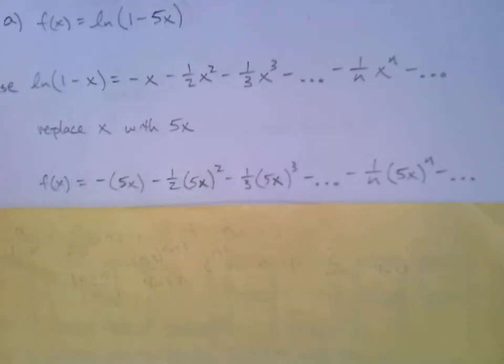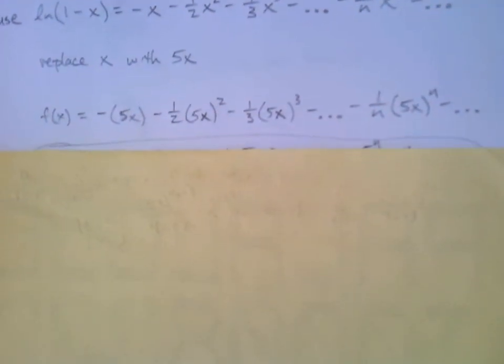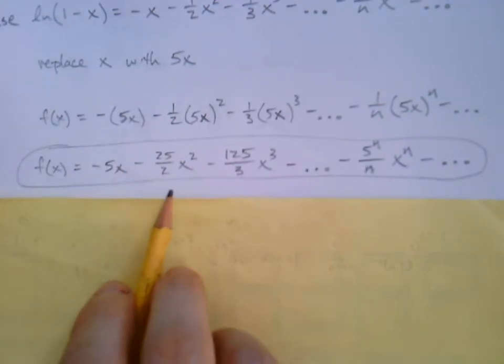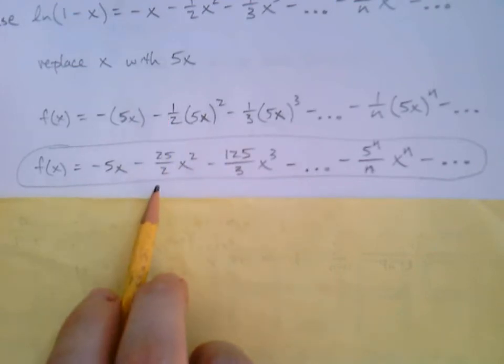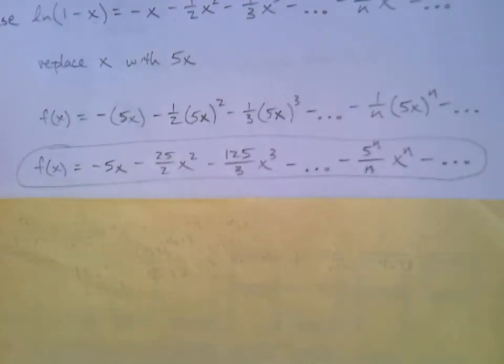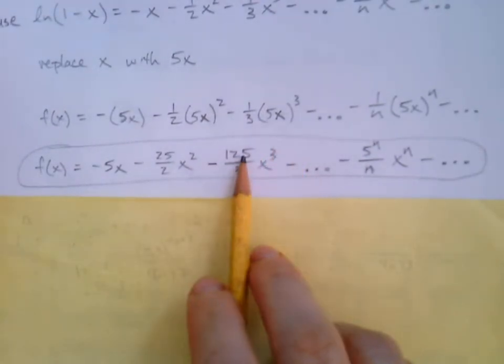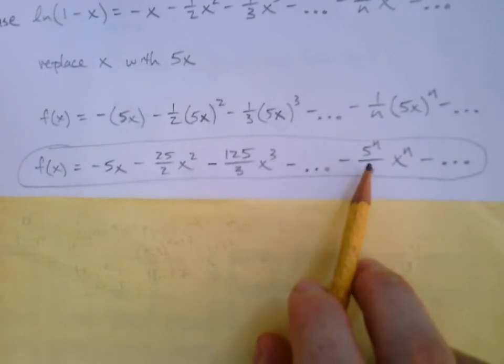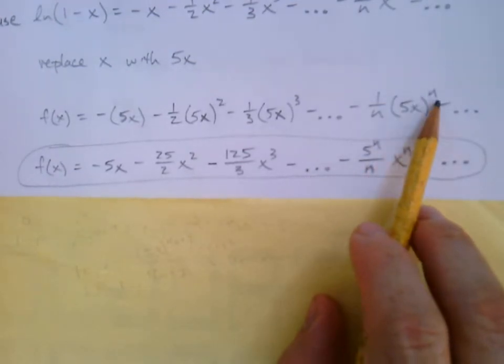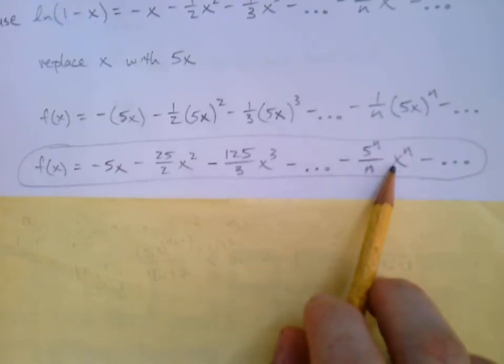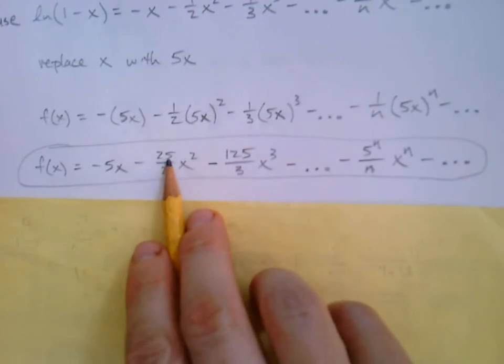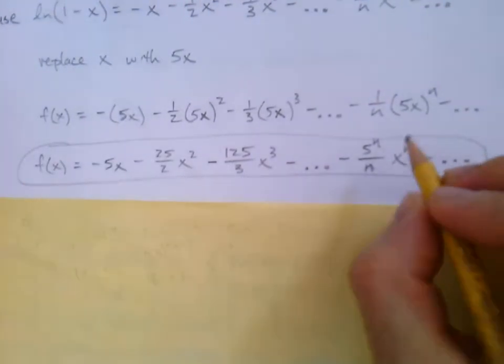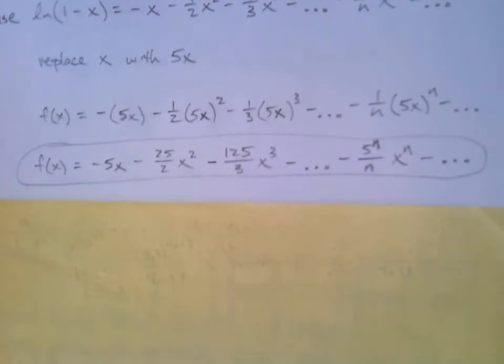Now we want to simplify. That's going to be our series. Negative 5x here. This time when we square and combine, minus 25 over 2 x squared. The next one with the cube, 125 over 3 x to the third. Here, this power of n would go to them both. So 5 to the n over n times x to the n fits the same pattern. 5 squared, 5 to the third, 5 to the n, x to the n. We got the series. Looking really good.